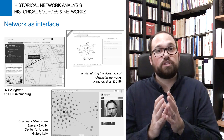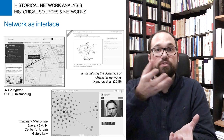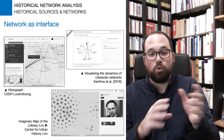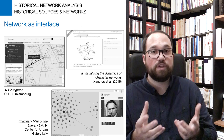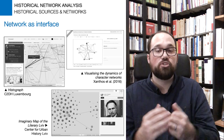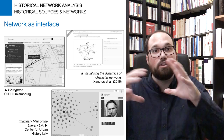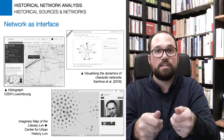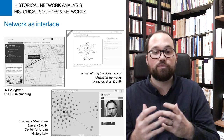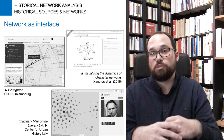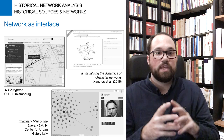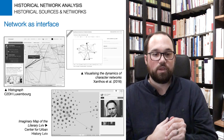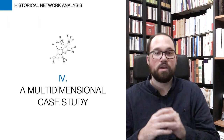There is another way of using networks not related to the type of source but to how we use the output for research — the network as interface. The network is no longer only a way to produce metrics or a visualization to understand structure, but becomes the interface through which you look at the data, dig into it, and come back to it. It is very powerful to have a graph-based representation of your database where you can click on vertices and edges to better understand what your data is about and return to the archives.